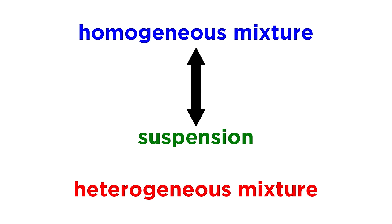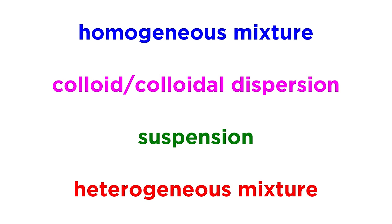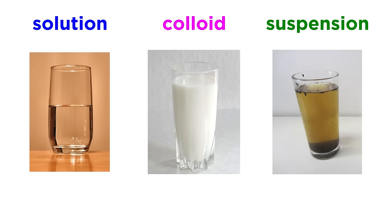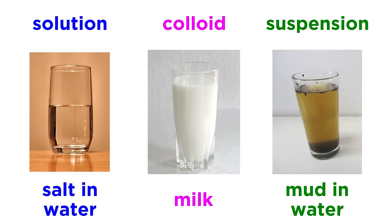We can also create a mixture that is in between a suspension and a homogeneous solution. This will usually form because the particle size is larger than ions or small molecules, but smaller than the particles in a suspension. Such a solution is called a colloid, or a colloidal dispersion. To illustrate the difference between a solution, a colloid, and a suspension, let's look at saltwater, milk, and mud. The difference in particle size is what determines the different characteristics of these mixtures.